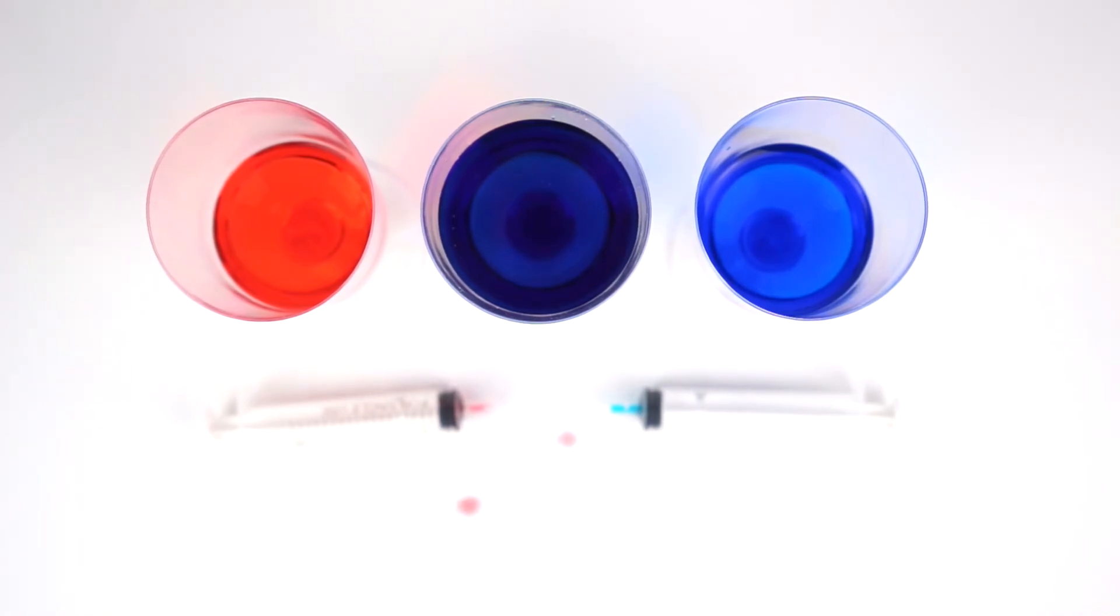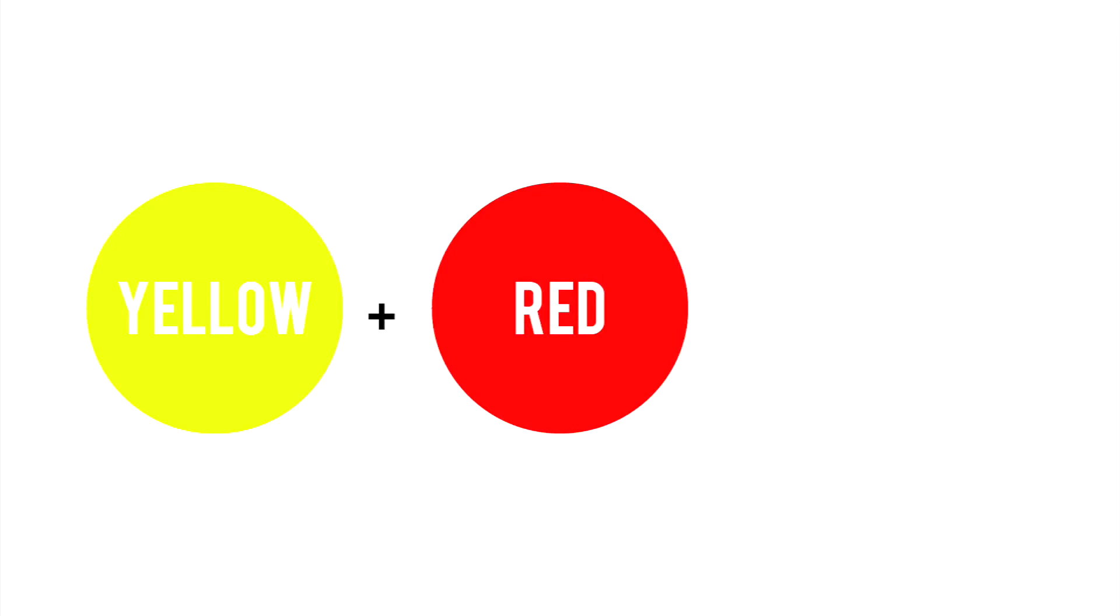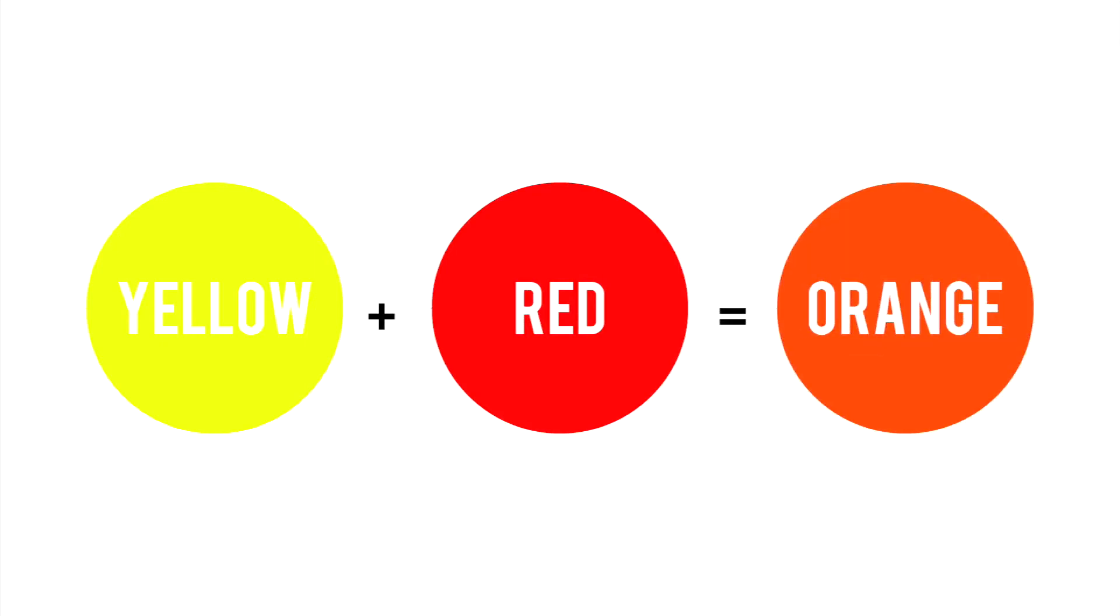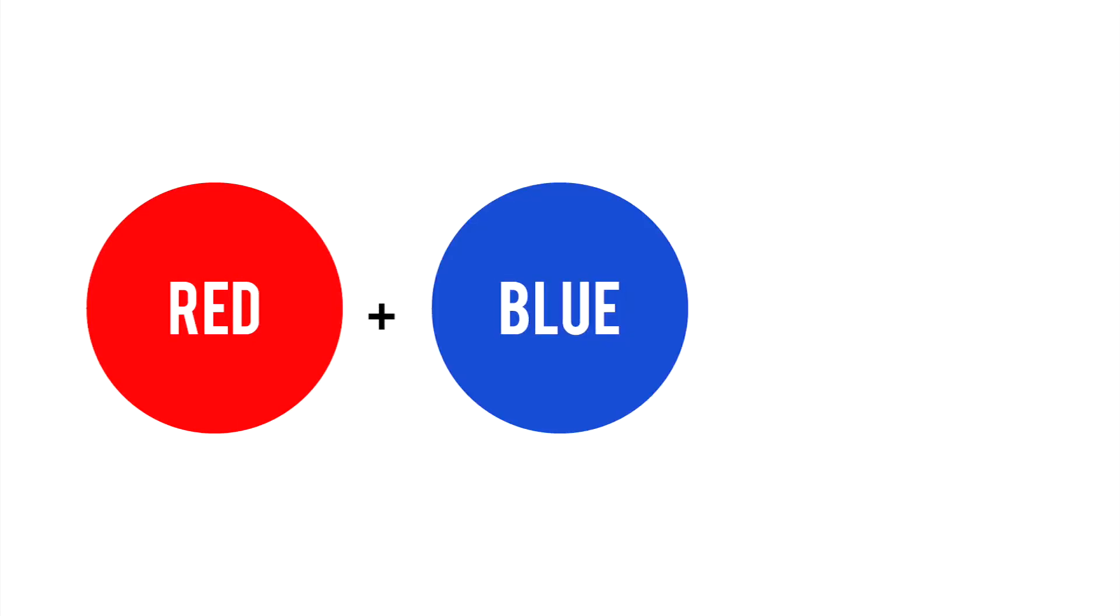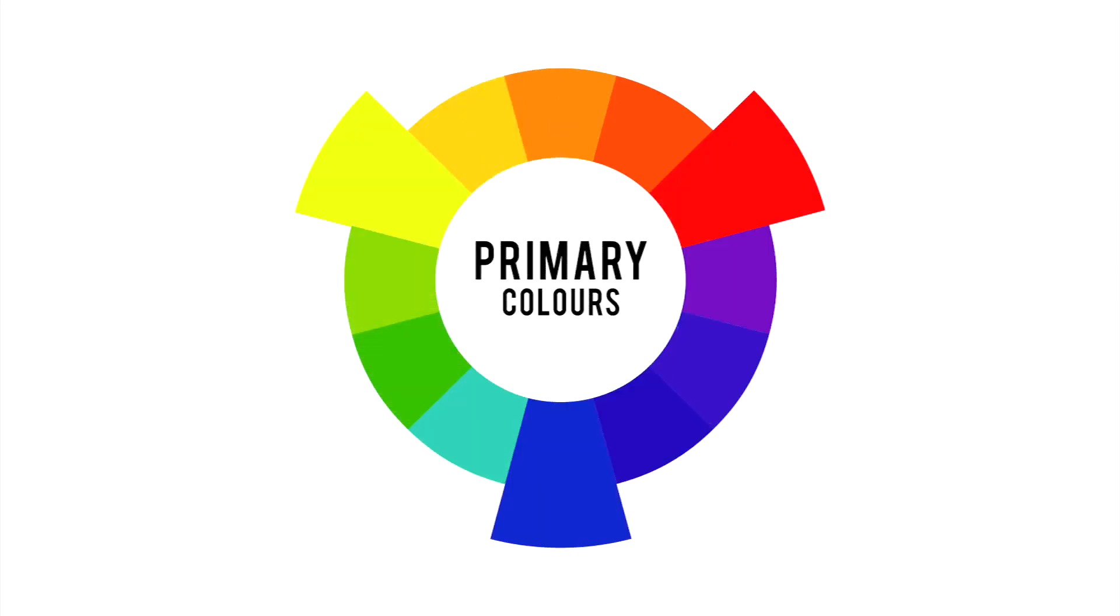Okay, let's go over what we learned so far. We know that mixing blue plus yellow equals green. Yellow plus red equals orange, and red plus blue equals purple. Now you know what primary colors are. You can mix all of the colors of the rainbow just by starting with these three colors. Isn't that so cool?